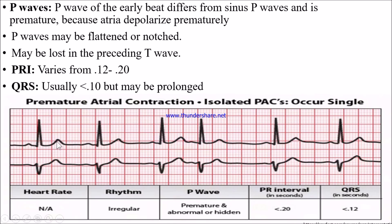In the PAC ECG, the early P wave is lost in the preceding T wave, so we cannot differentiate the T wave from the P wave. The PR interval is normal. The QRS duration may be prolonged or normal — we can see the PQRS complex demonstrating this on the ECG.